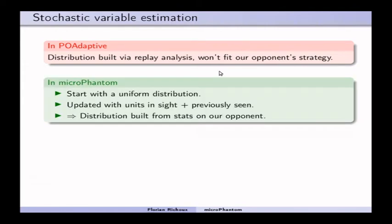So, to fix this, now in MicroPhantom, we start every game with a uniform distribution. So, when we want to guess an enemy unit, we have exactly one-third chance to pick up a heavy, light, or range unit.